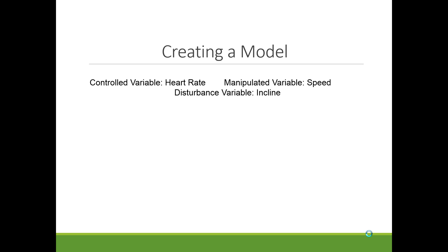After obtaining the FOPDT constants for both grade and speed, we created a model in MATLAB to control heart rate based on these variables. The controlled variable was heart rate, the manipulated variable was speed, and the disturbance variable was incline. We developed PI constants that would accurately model the body, accounting for the fact that it takes a few seconds for a human to change speed, and set the PI constants accordingly.